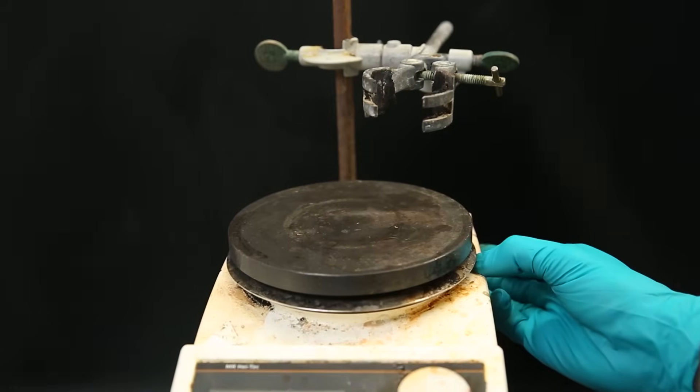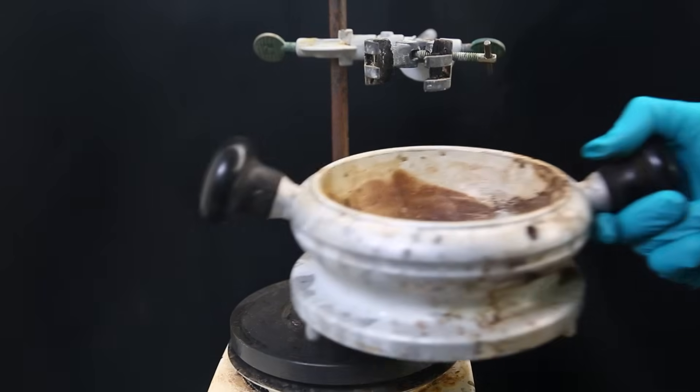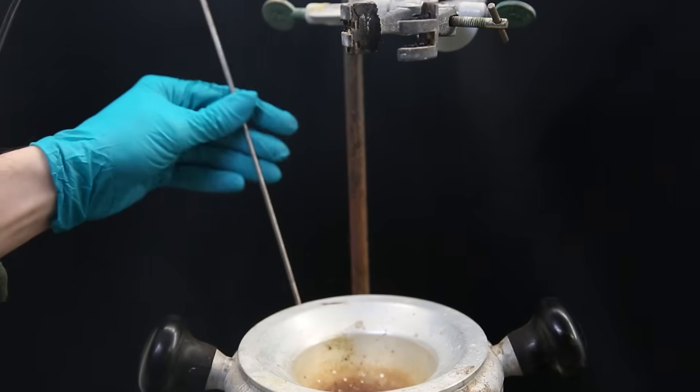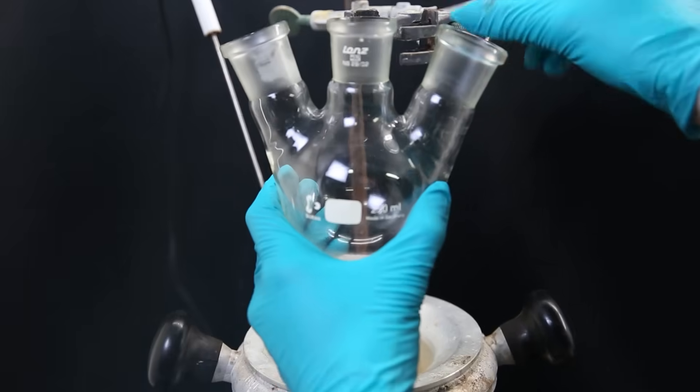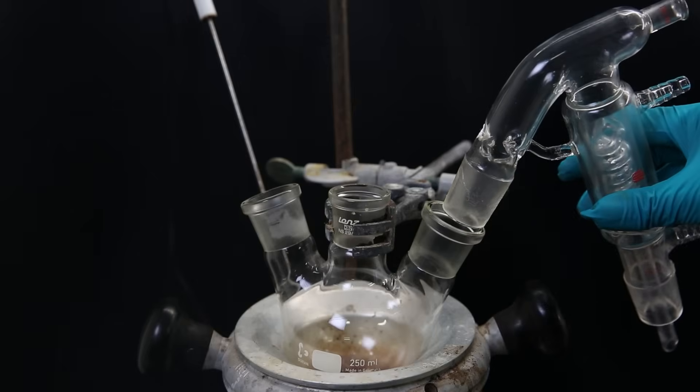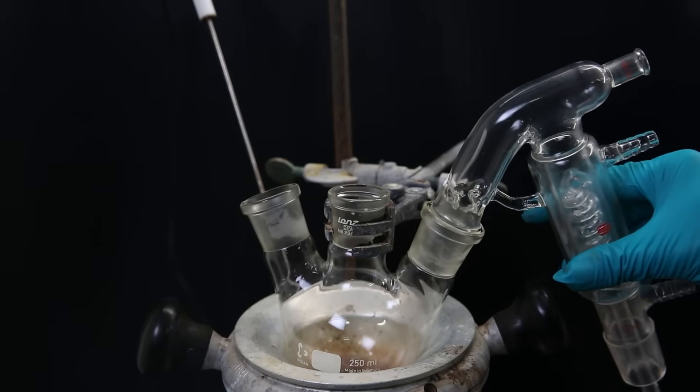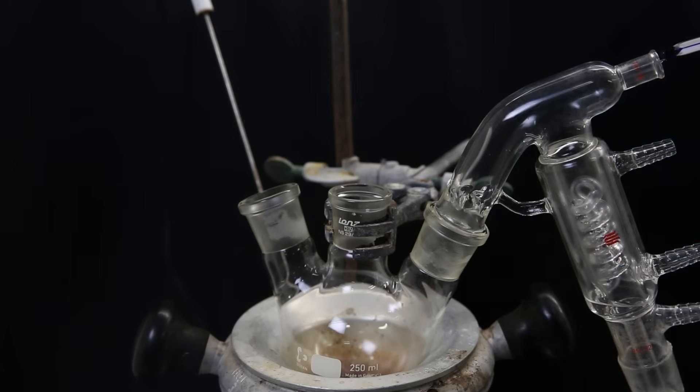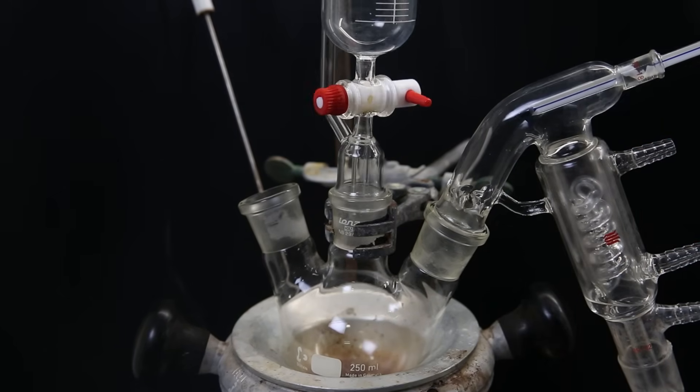So I set up a hot plate, a heating mantle, and a three neck flask. I then attach a short path distillation apparatus. I attach a dropping funnel, and I have put in a stir bar.